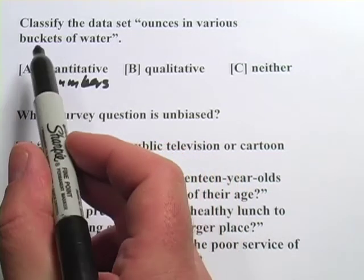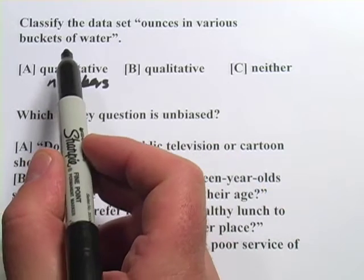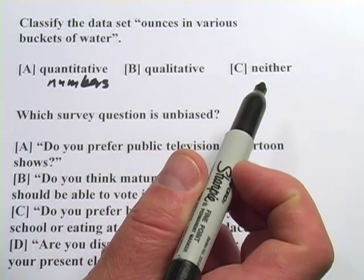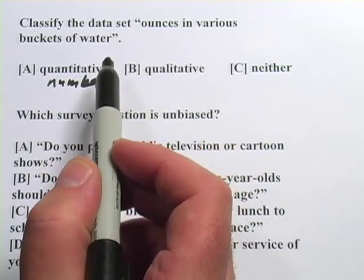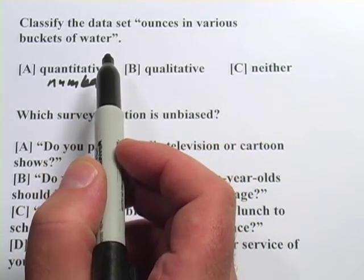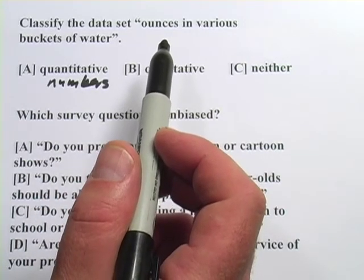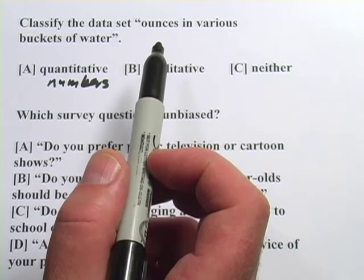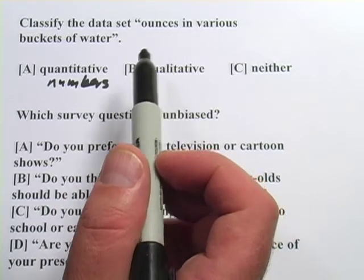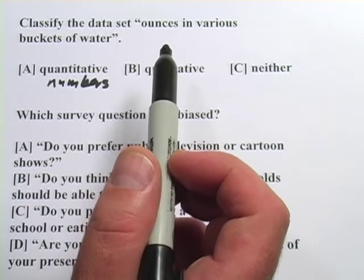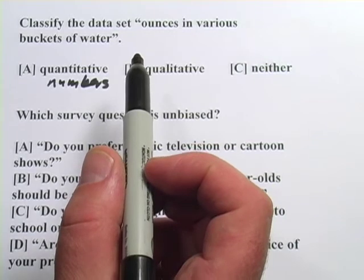Let's look at this question. It says classify the data set — ounces in various buckets of water — as either quantitative, qualitative, or neither. When they say classify the data set, they mean there might be a lot of different buckets of water that have different numbers of ounces in them. The answer is quantitative because we measure ounces in numbers. This bucket has 12 ounces, this bucket has 64 ounces — so that's quantitative, not qualitative.